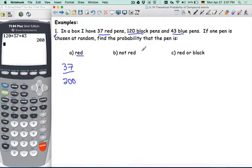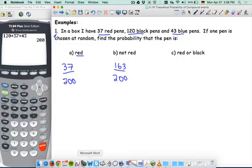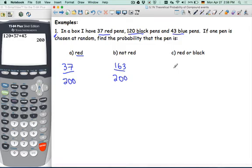What is the probability then that they are not red and what do you call that in relation to the red? They are complementary events. So therefore, if 37 are red, how many are not red? 163, is that right? Good.